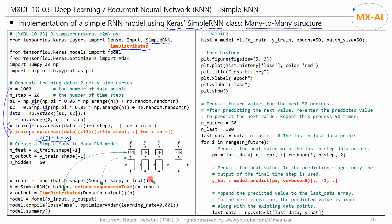Now let's build a many-to-many RNN model. As with the many-to-one model, there is an input layer, a recurrent layer, and an output layer. However, unlike the many-to-one model, the output H of each time step is passed to the output layer. To create a many-to-many model, we set the return_sequences argument to True, meaning it returns H for each time step. We then use the TimeDistributed class to create the output layer, distributing it across each time step.